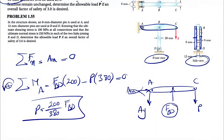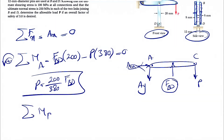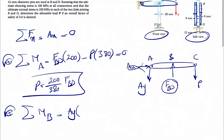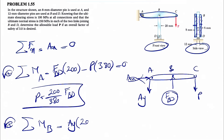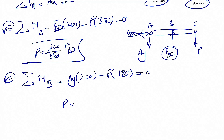We did not get a negative sign, which confirms the correct direction for FBD. If we had assumed the opposite direction at the start, we'd get two negative moments and a negative sign indicating upward — that's how you verify the correct direction. Taking moments about point B: AY times 200 minus P times 180 equals zero, so P equals (200/180) times AY.